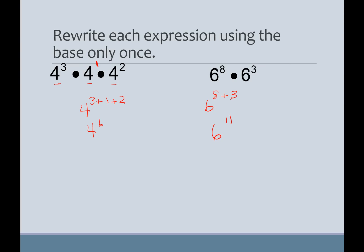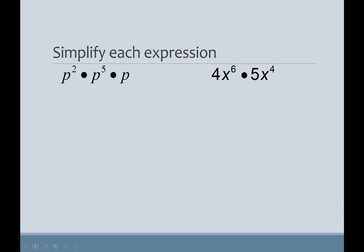I just want to make sure that you understand how to multiply these because now we can do it with variables. Again, I'm going to drop my invisible one right there. So, I've got P, 2 plus 5 plus 1 is going to give me P, when I add those all together, to the eighth.